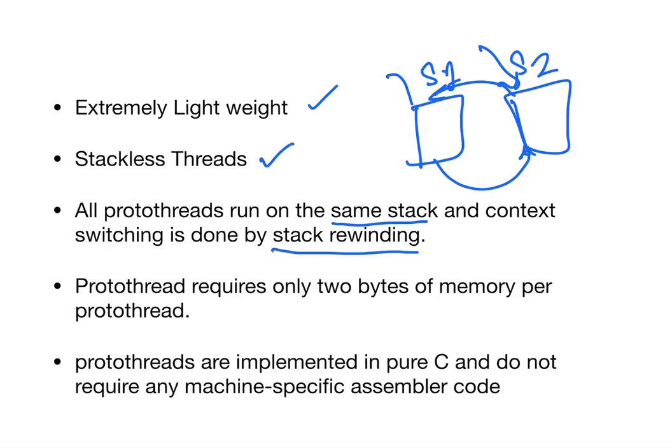Proto thread requires only 2 bytes of memory per proto thread. Stack needs more space, but here it just needs 2 bytes. Because IoT devices have less energy, less power and less memory and less computing resources, just 2 bytes per proto thread is a very good option. Proto threads are implemented in pure C and do not require any machine specific assembler code. I will explain a source code in week 3 on how proto threading mechanism can be helpful for IoT development. It is completely written in pure C, but there are no machine specific assembler codes available in proto threading.